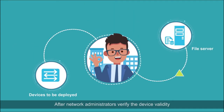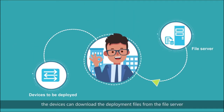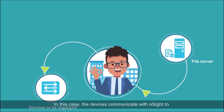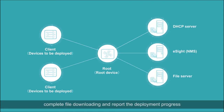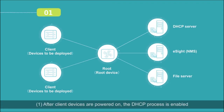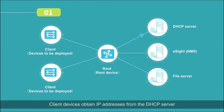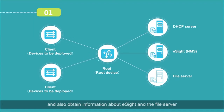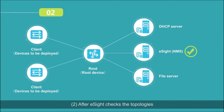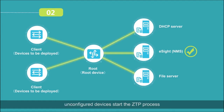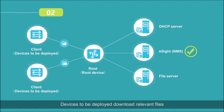After network administrators verify the device validity, the devices can download the deployment files from the file server. The devices communicate with eSight to complete file downloading and report the deployment progress. After client devices are powered on, the DHCP process is enabled. Client devices obtain IP addresses from the DHCP server and also obtain information about eSight and the file server. After eSight checks the topologies, unconfigured devices start the ZTP process, download relevant files, and restart to complete activation.